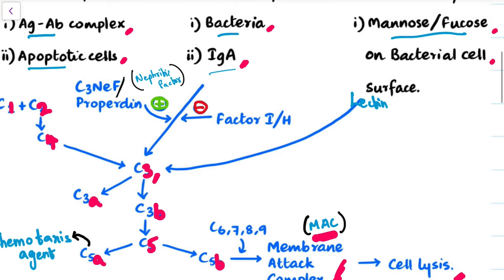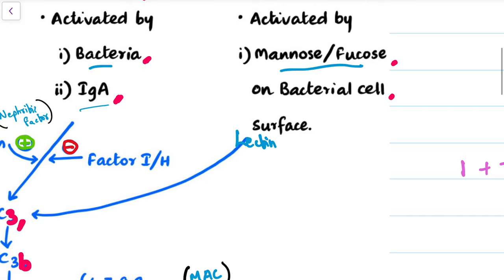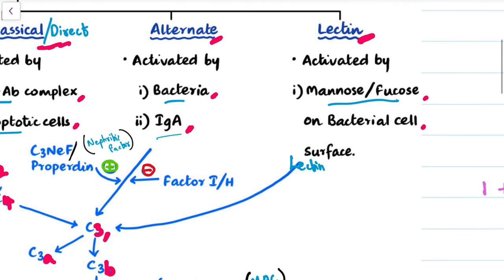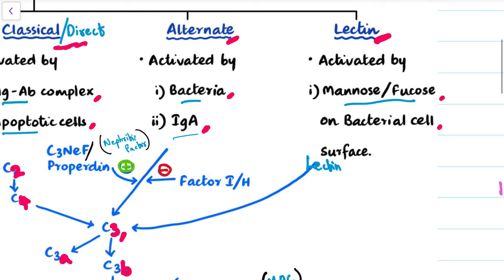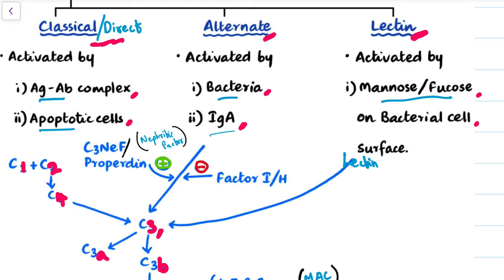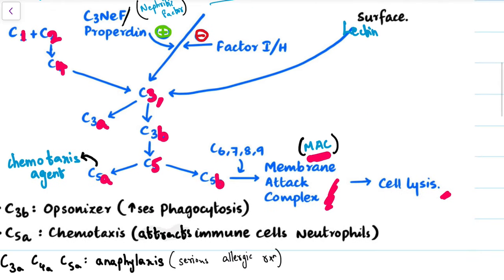In the lectin pathway, the lectin is present on the cell surface. This directly goes and activates complement 3, and thereby the pathway goes on.